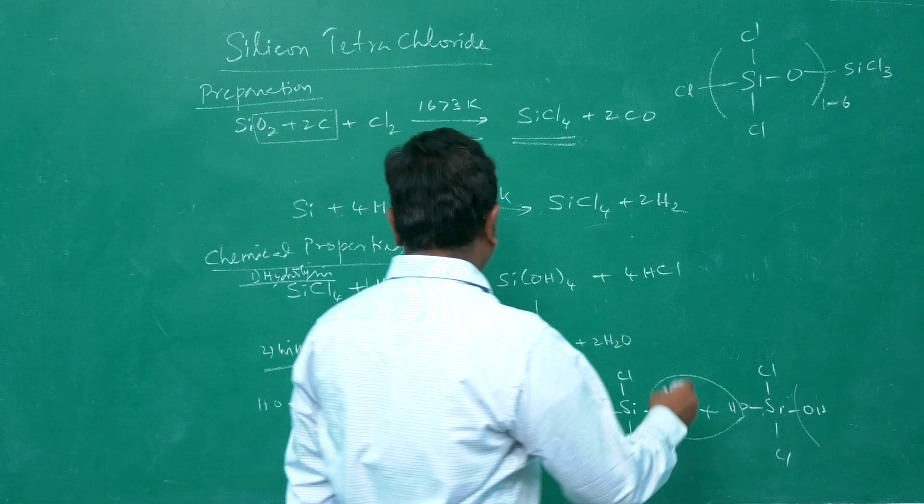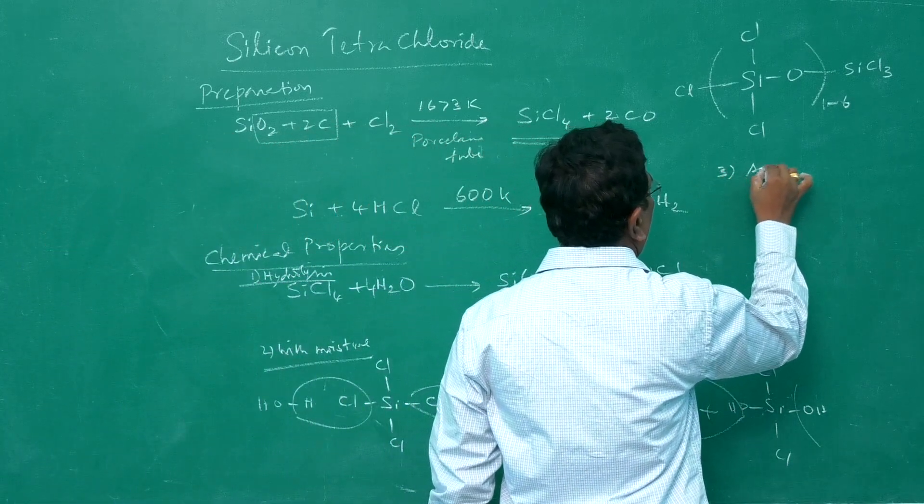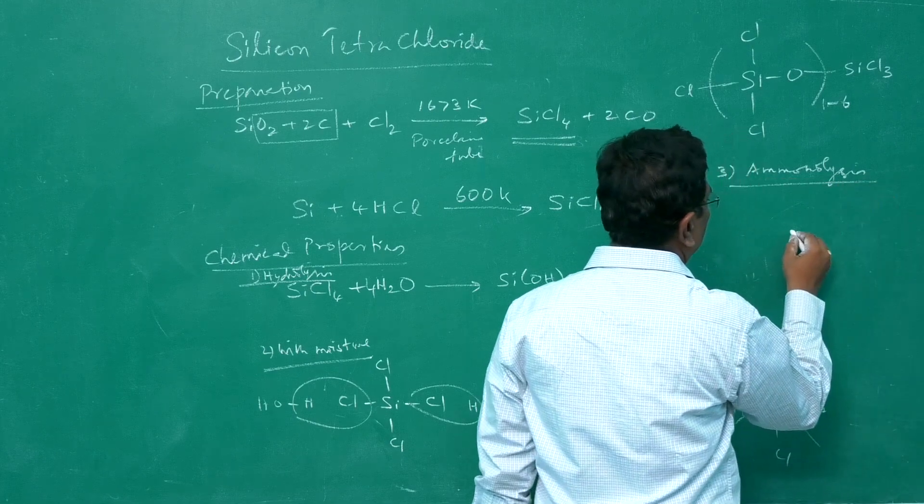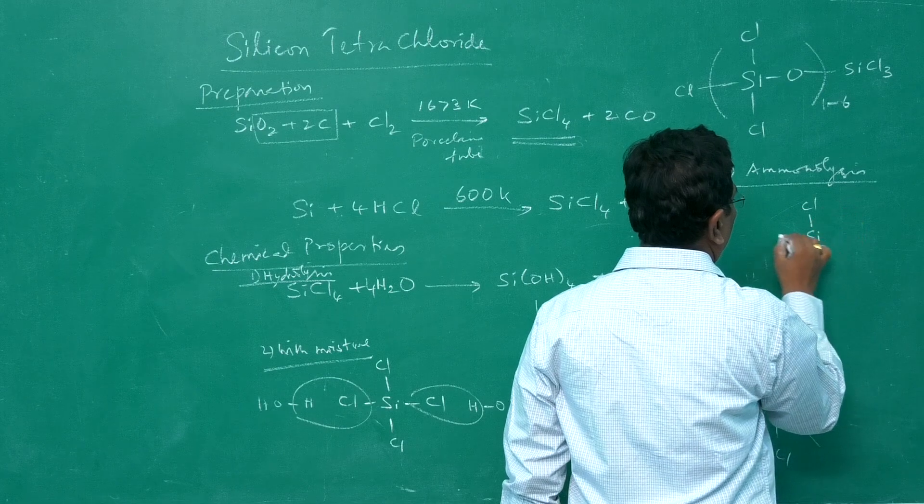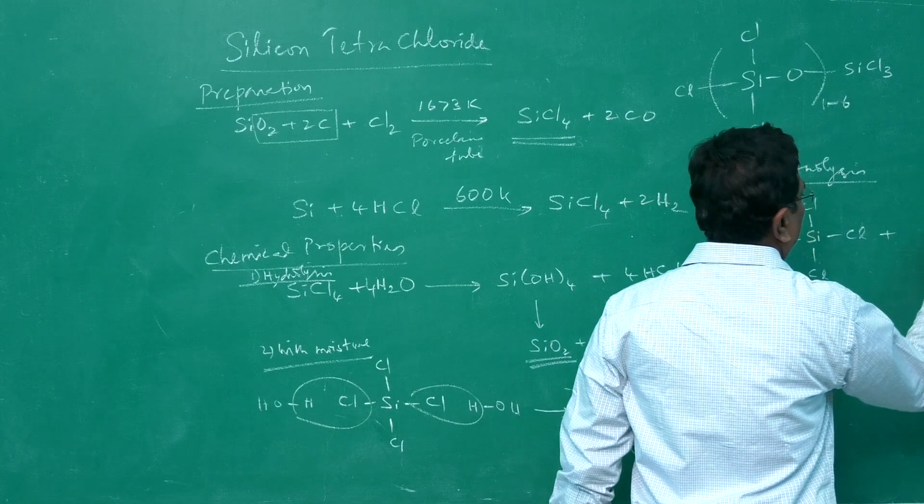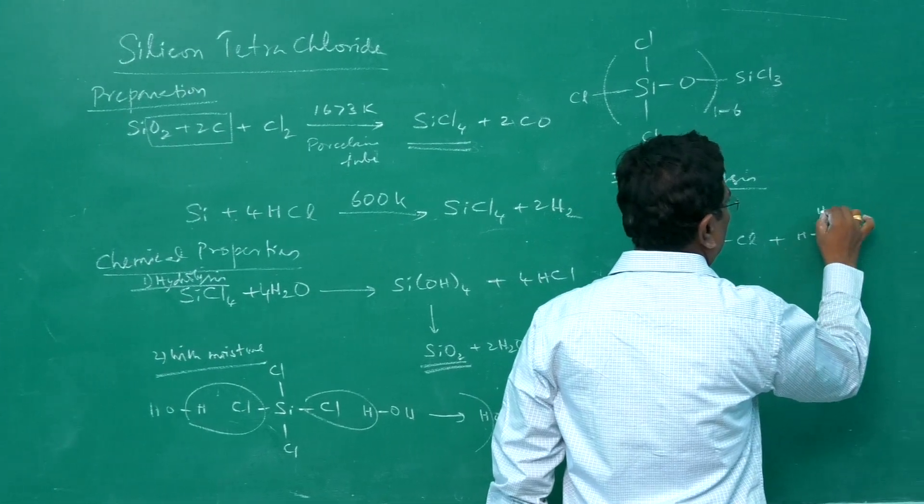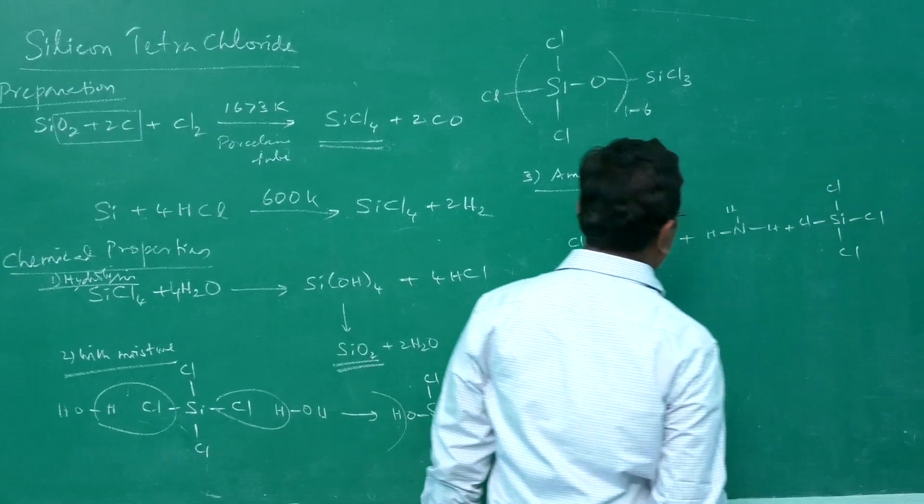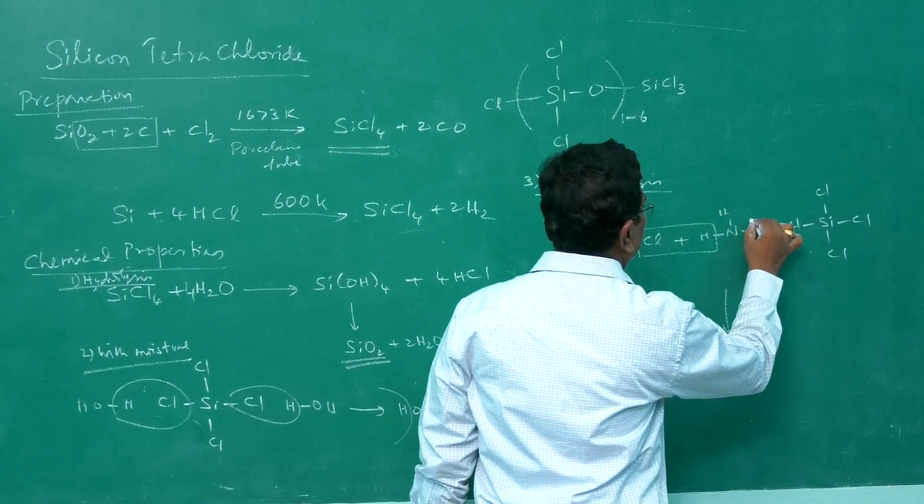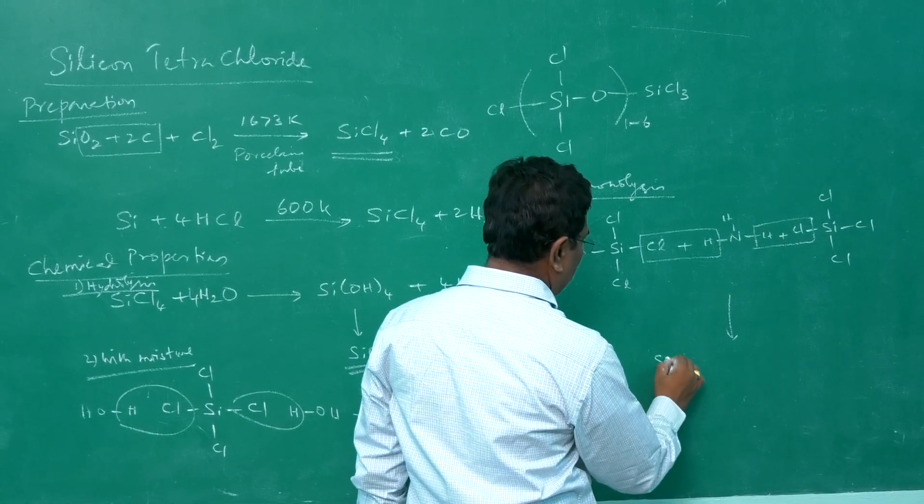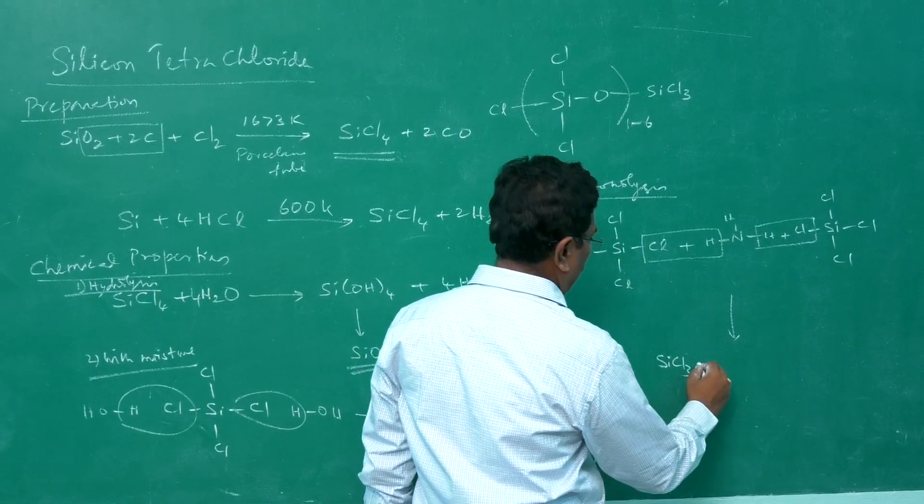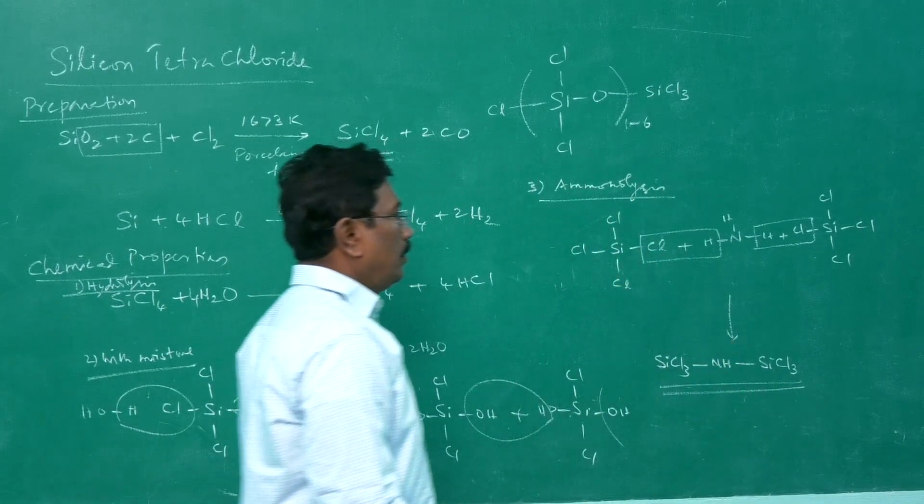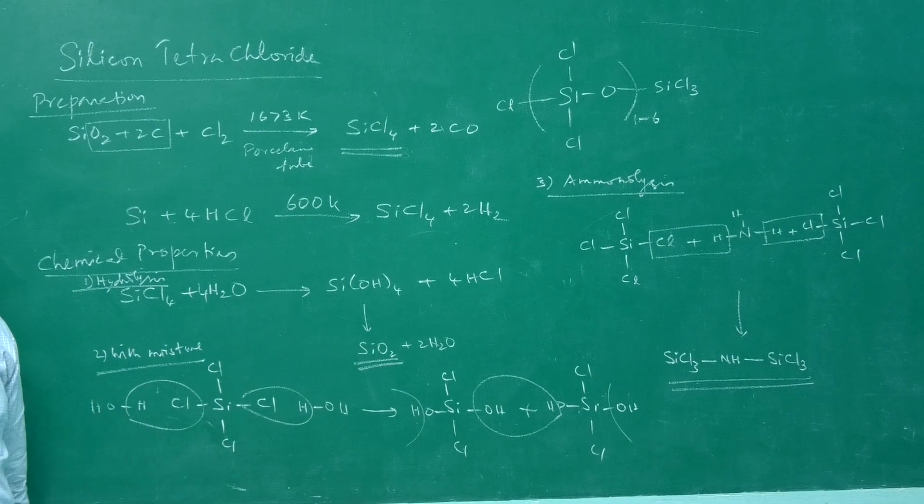Ammonolysis: fission by the use of ammonia is called ammonolysis. It is not exactly ammonolysis. The reaction takes place with two molecules of silicon tetrachloride, SiCl4, plus ammonia. One molecule of ammonia, and another molecule of SiCl4. What is happening? This Si-Cl and this Si-Cl get eliminated. You'll be getting SiCl3-NH-SiCl3 bonded through nitrogen. Because of ammonolysis, we get this type of compound.